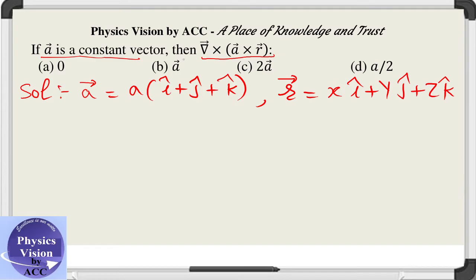Now we will take the cross product of a and r first. a cross r will be given by i cap j cap k cap, this will be 1, 1, 1, and this will be x, y, and z.